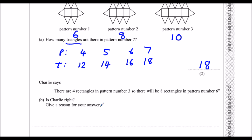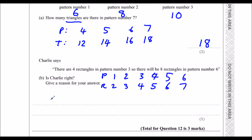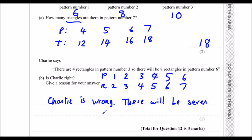The number of rectangles is going up by 1 each time. In pattern 1 there were 2 rectangles, then 3, then 4. So when we get to pattern 6, there's going to be 7, because if we keep adding on 1 each time we'll get to 7. So Charlie is wrong — there will be 7 rectangles in pattern 6.